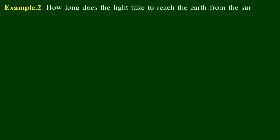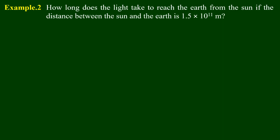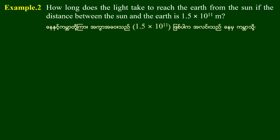Example 2: How long does light take to reach the Earth from the Sun, if the distance between the Sun and the Earth is 1.5 × 10¹¹ meters? The value of C is equal to 18,600 miles per second, or 3 × 10⁸ meters per second.